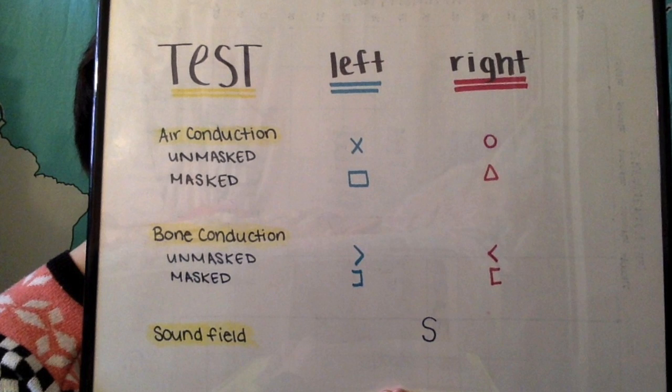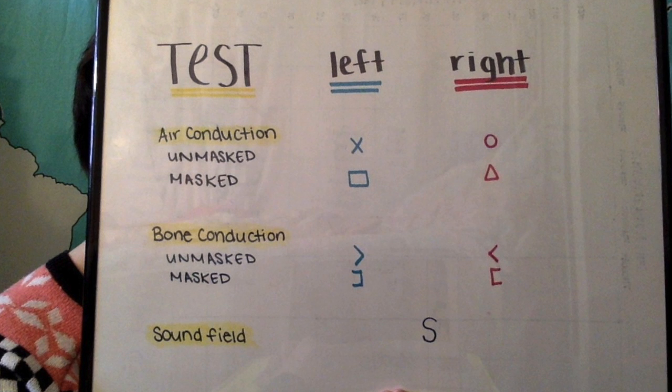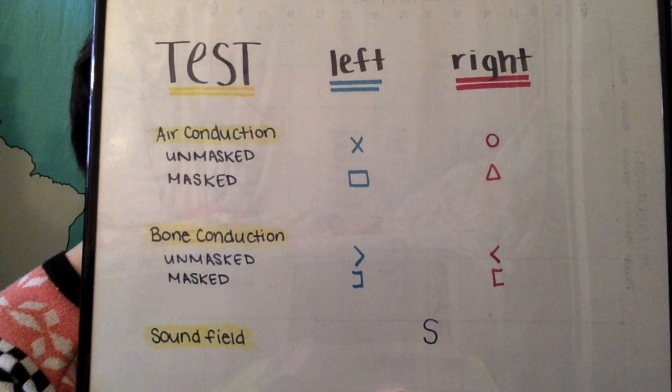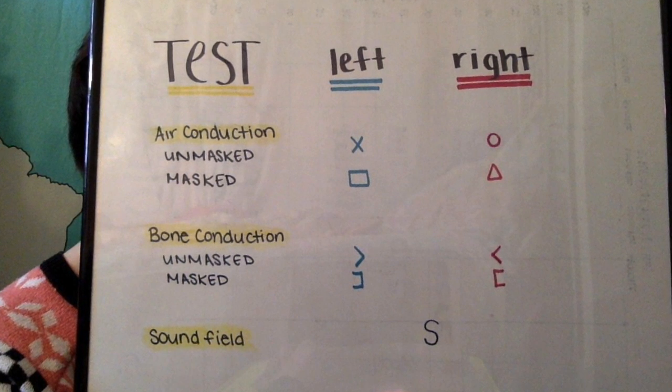The symbols used in the audiogram will correspond to the type of test and the ear that's being tested. Air conduction tests are the ones with headphones or ear inserts.